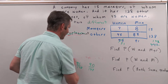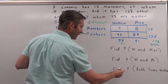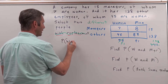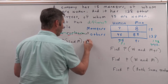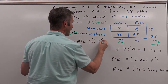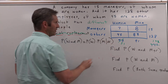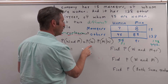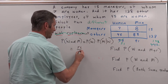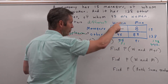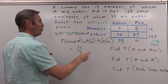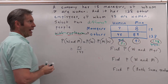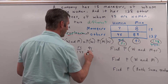Looking at the multiplication rule itself: the probability that we get a woman and then a man equals the probability of getting a woman times the probability of getting a man given that a woman was selected the first time. The probability the first person was a woman is 52 out of 143. The women are depleted by one, leaving 142 people, so the probability of getting a male is 91 out of 142.